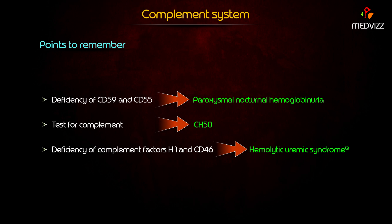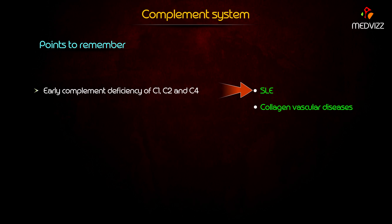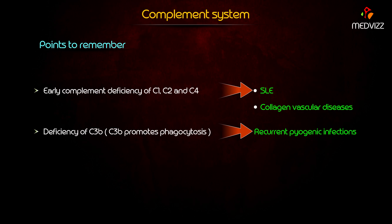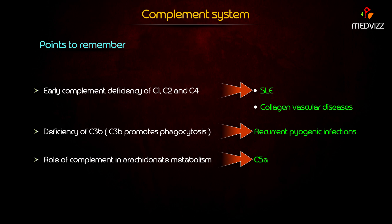Deficiency of complement factors H, I, and CD46 is associated with hemolytic uremic syndrome. SLE and collagen vascular diseases occur due to early complement deficiency involving C1, C2, and C4. Recurrent pyogenic infections are mainly due to deficiency of C3b, which promotes phagocytosis. C5a plays a role in arachidonic acid metabolism.